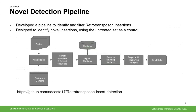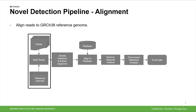To achieve this goal, we developed a novel detection pipeline to identify and filter retrotransposon insertions. This pipeline is designed to identify novel inserts using the untreated set as a control, and it's implemented in Python and Snakemake, available on GitHub. The first step is to align reads to the GRCh38 human reference genome. The pipeline is optimized to use WinnowMap2 as the aligner, but will work with other long read aligners as well.